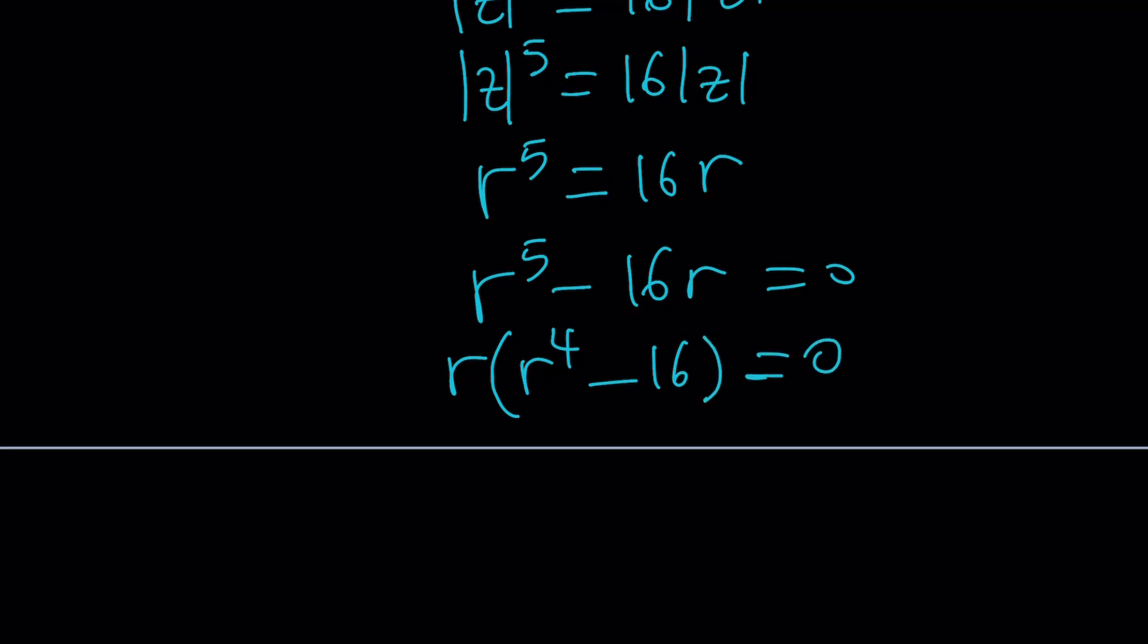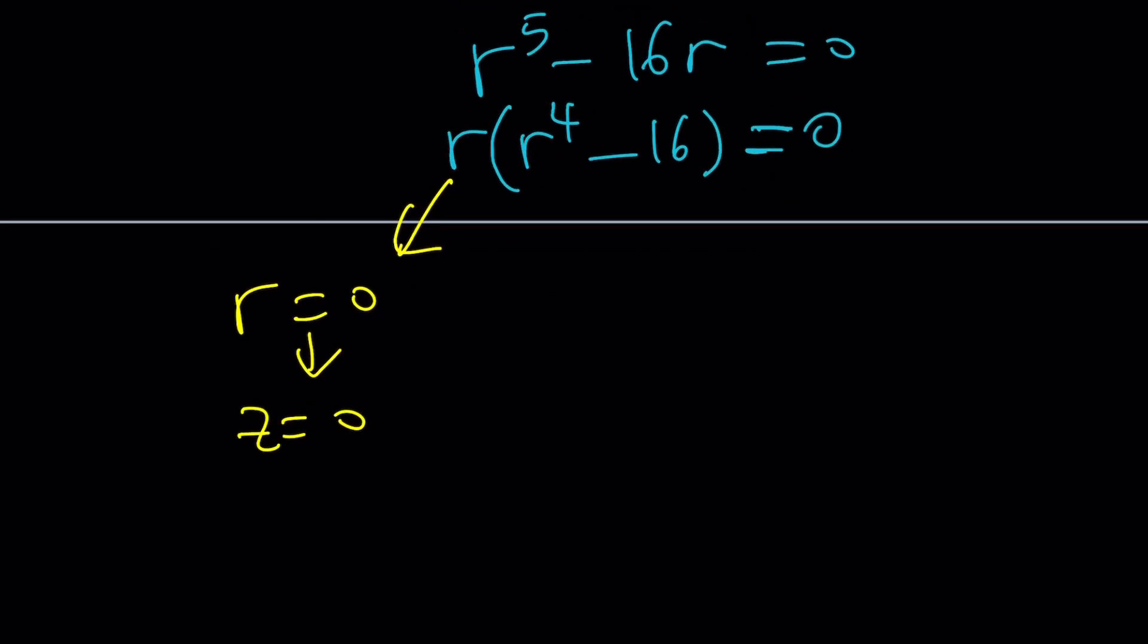From here we get two things. Actually, three things but one of them is not valid. First thing, R equals zero. If R is zero, then Z is zero because there's only one number whose absolute value is zero and that is just zero plus zero I. And obviously, if you plug it into the original equation, Z to the fifth equals negative 16 Z bar, it satisfies because the conjugate of zero is zero and zero equals zero.